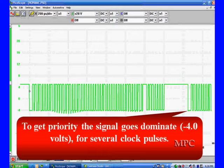To get priority, the signal goes dominant. In this case, minus 4 volts for several clock cycles. You see it right there. It's going dominant and it's stopping everything from talking.